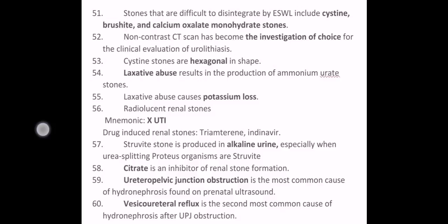Non-contrast CT scan has become the investigation of choice for the clinical evaluation of urolithiasis. Cystine stones are hexagonal in shape. Laxative abuse results in the production of ammonium urate stones and causes potassium loss. Radiolucent renal stones — mnemonic is X-UTI: xanthine stones, uric acid, triamterene, and indinavir (drug-induced renal stones). Struvite stones are produced in alkaline urine, especially when urea-splitting Proteus organisms are present. Citrate is an inhibitor of renal stone formation.